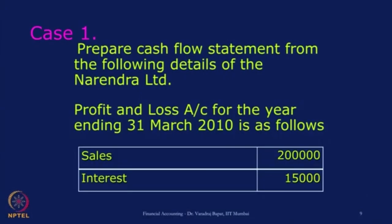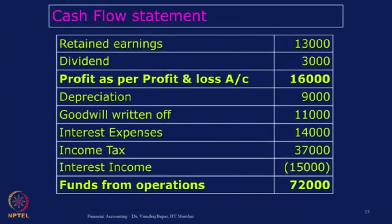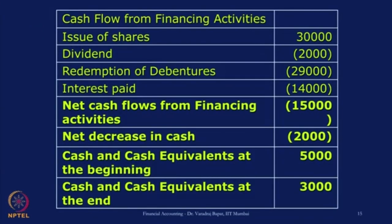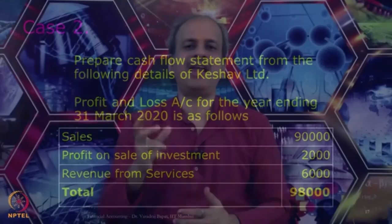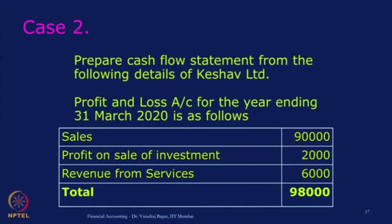We have already done one case; now we will go for the second case. With this introduction, be prepared for the second case — it will be better if you take a printout of this particular case so that you can actually solve it as I am also solving it. Now look at the given data: we have been given the profit and loss account for the year ended 31st March 2020.